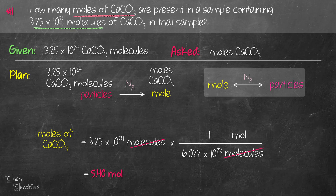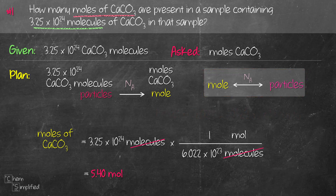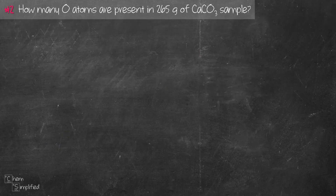We calculate 3.25 × 10²⁴ divided by 6.022 × 10²³, which equals 5.40 moles. That's solving a stoichiometric problem using dimensional analysis and Avogadro's number to interconvert between moles and particles. You might think this was a super easy question — what about a harder one? Can we still use the same method? Absolutely. Let's try a more challenging one.